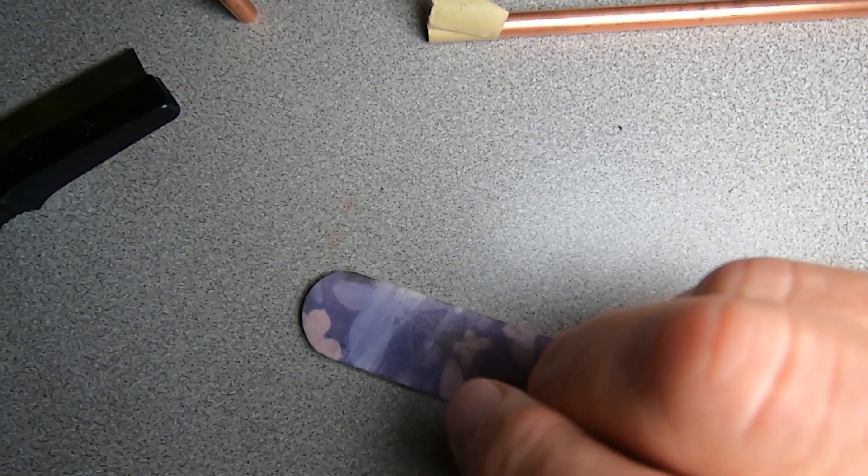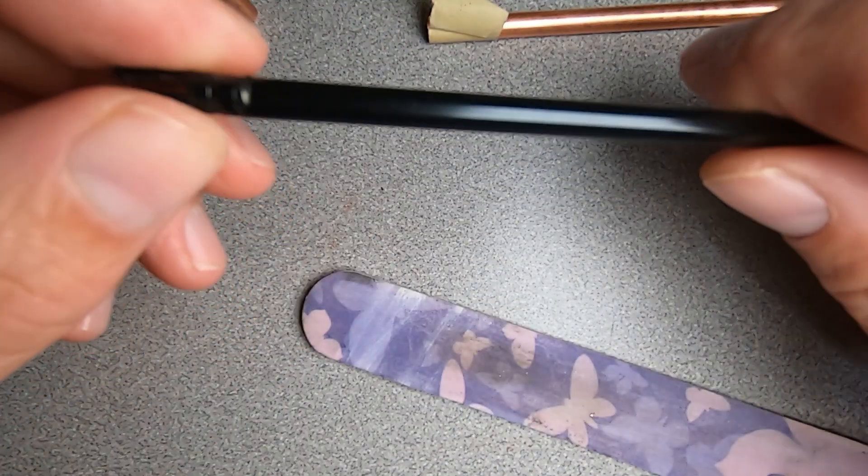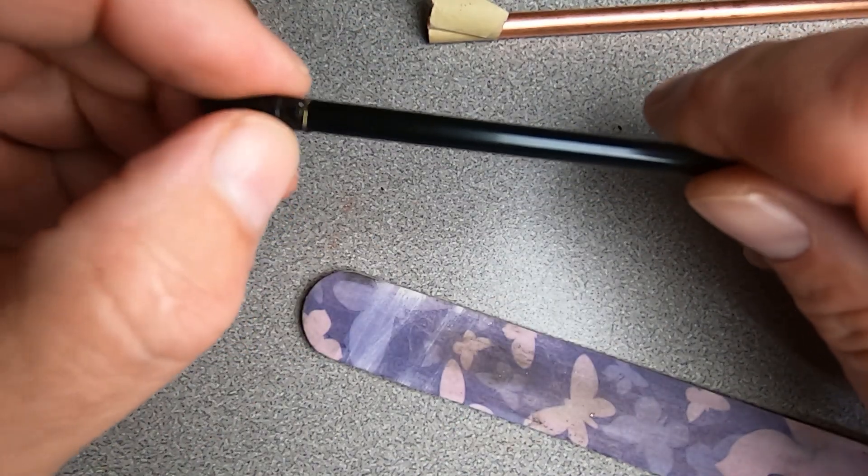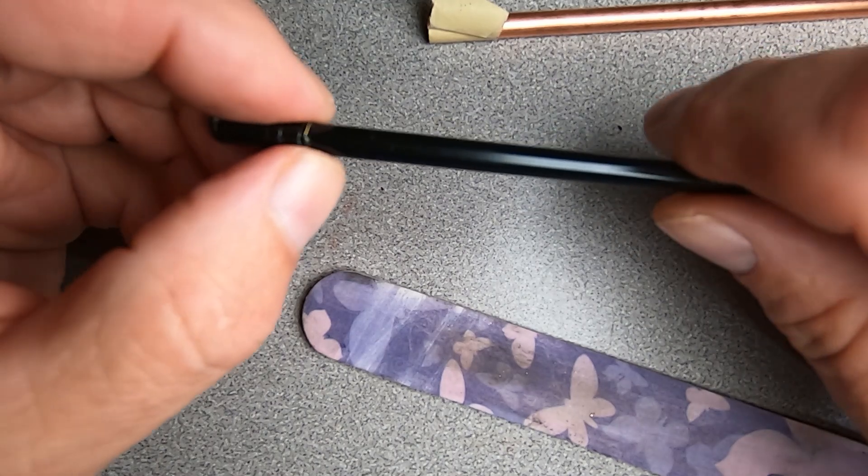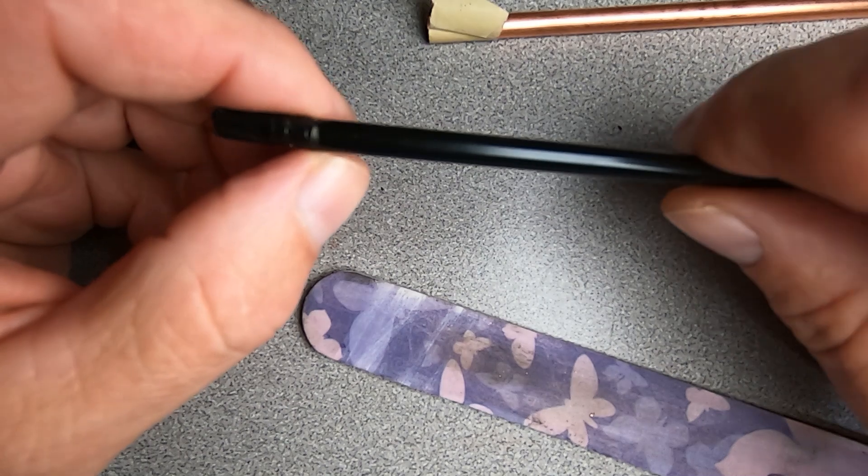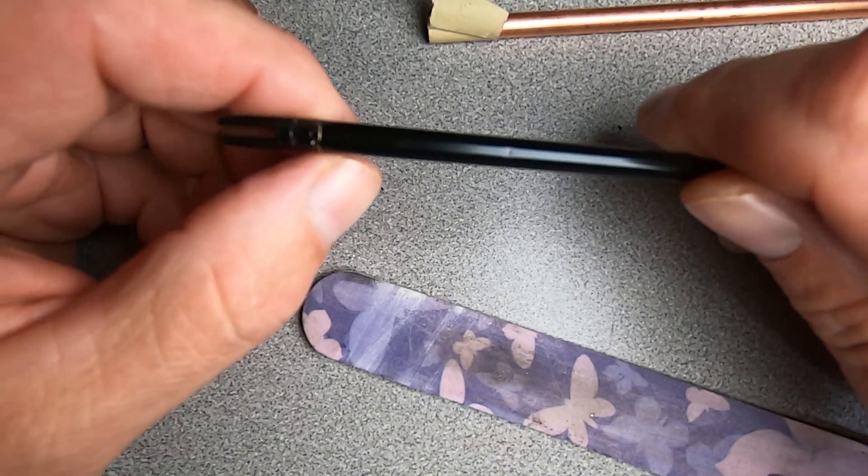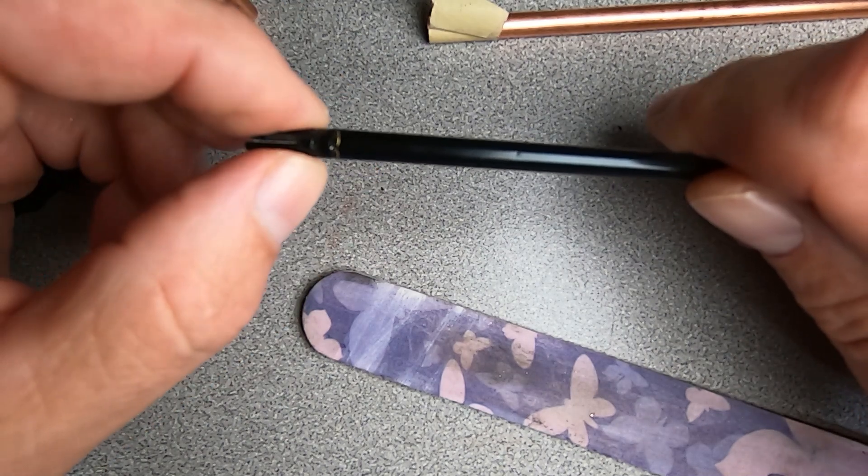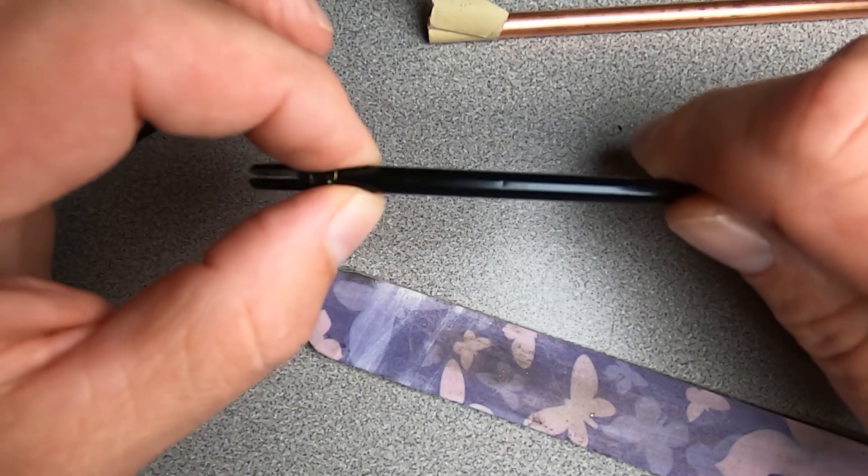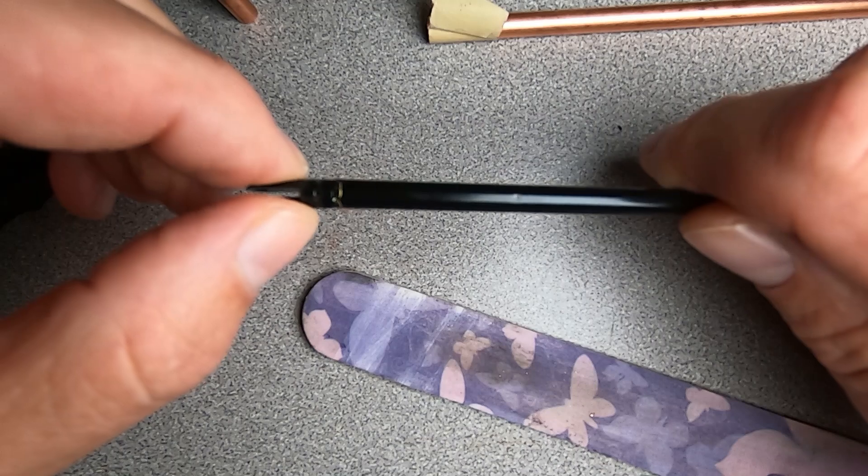Now we need to prep our element. And this being brass, what we need to do is we need to take our emery board, and we need to remove the finish from this antenna all the way around. Because how we're going to fix this is we're going to flow solder into this, and it's going to be a nice solid repair. It'll be stronger than it was originally.